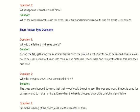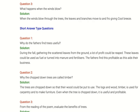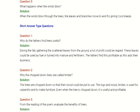Question second: Why are chopped down trees called timber? Answer: When trees are chopped down, the wood is put to use. The logs and wood — called timber — are used for carpentry and to make furniture. Even when a tree is chopped down, it remains useful and profitable.